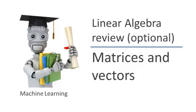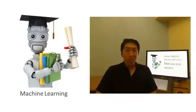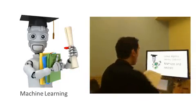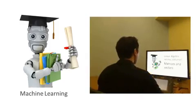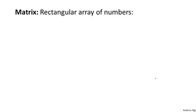Let's get started with our linear algebra review. In this video, I want to tell you what are matrices and what are vectors. A matrix is a rectangular array of numbers written between square brackets.